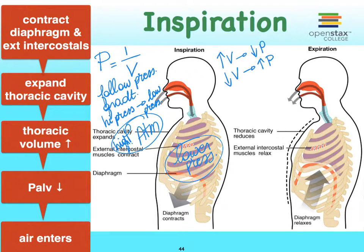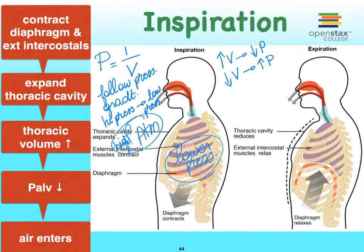When we relax the diaphragm, it goes back to its dome-shaped structure. That is typically enough for the rib cage to return to its original size and shape, as long as the external intercostal muscles relax as well. Of these two processes, inspiration is the only one that is actually an active contraction of muscles.